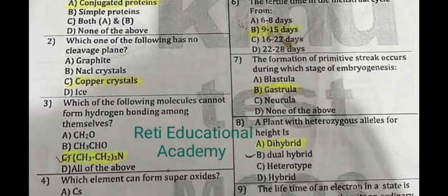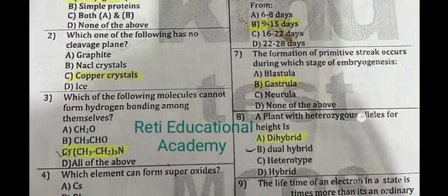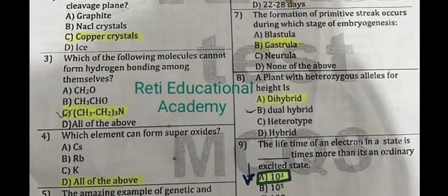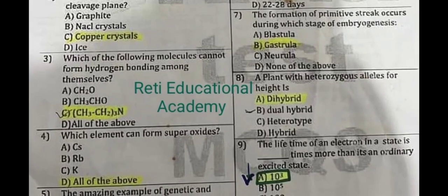The correct answer to question 2 is C: copper crystals. Question number 3: Which of the following molecules cannot form hydrogen bonding among themselves? The correct answer is C: CH₃–(CH₂)₃. Question number 4: Which element can form super oxides? The correct answer is all of the above.